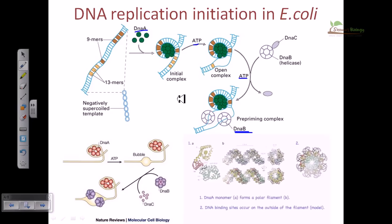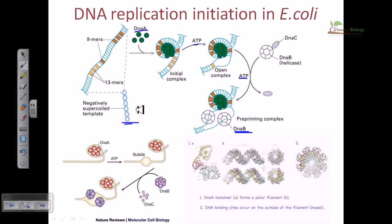This is a totally new concept, so try to memorize it. DNA A is actually forcing this DNA strand to make an open complex. In normal conditions, there is negative supercoiling inside the DNA — the underwinding of the DNA — which prevents the DNA from being accessed by other proteins. As a result of this negative supercoiling, the DNA cannot be accessed and is not eligible for DNA polymerization, so it must be opened up.